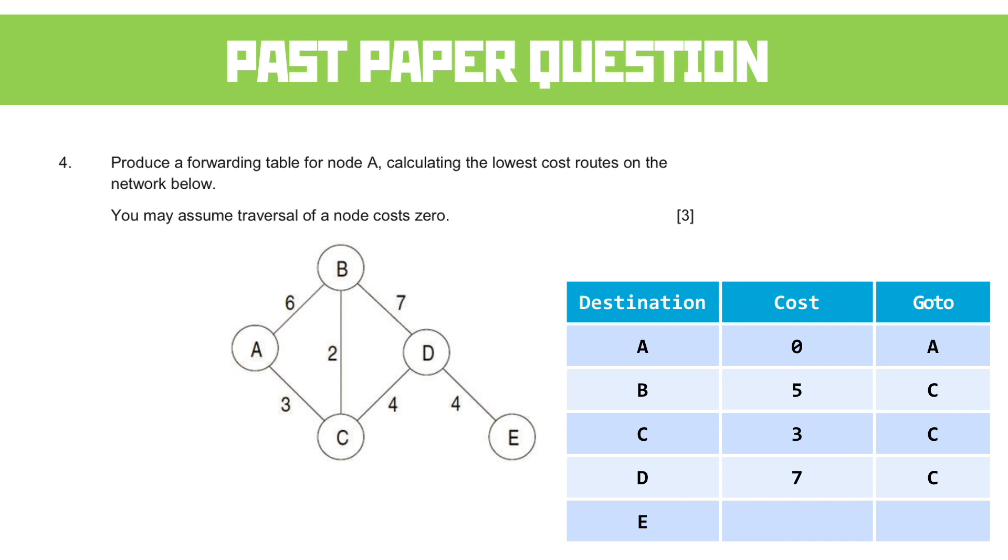E, then, is the one that makes the forwarding table seem a bit weird. If we have a quick look at it, to get to E, the easiest way is going via C. So, A to C to D to E, and that gives a total of 11.